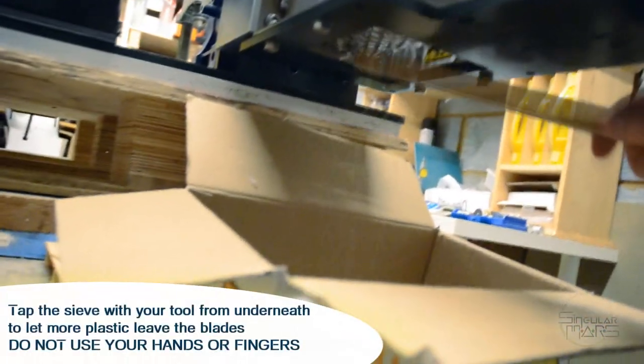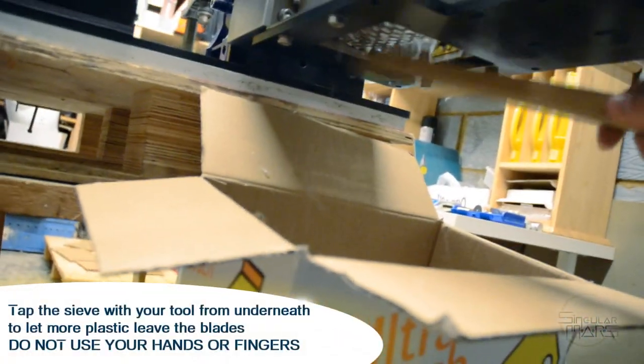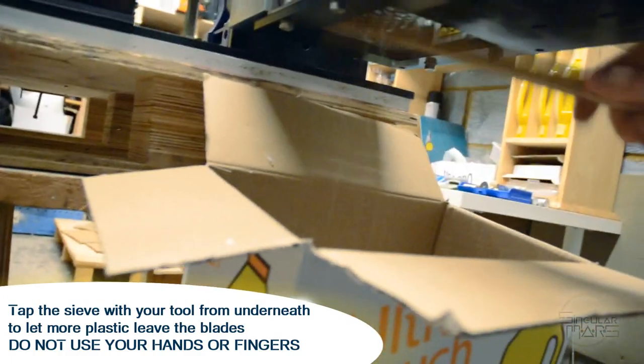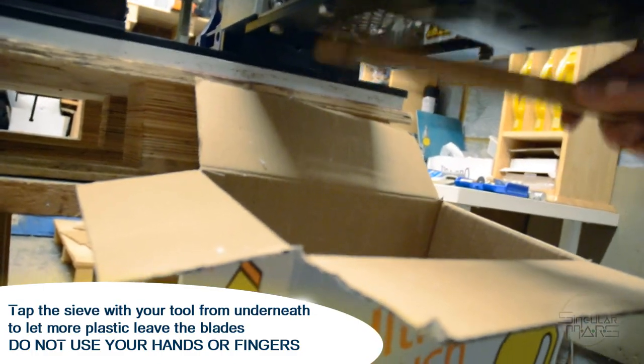Here's a tip, the sieve here will get a bit clogged, so if you tap it like this with a piece of wood again, or a piece of plastic, if you tap it so that all that shred plastic can come out easier, that will make things easier for the shredder.